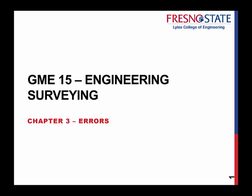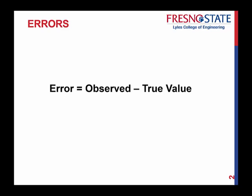Now that we've talked about direct observations and indirect observations, we need to understand that no matter how good you are, there are errors involved. Whether you're directly making a measurement or calculating something, there's always some sort of error involved. So here is your general equation: your error is equal to your observed value minus your true value.